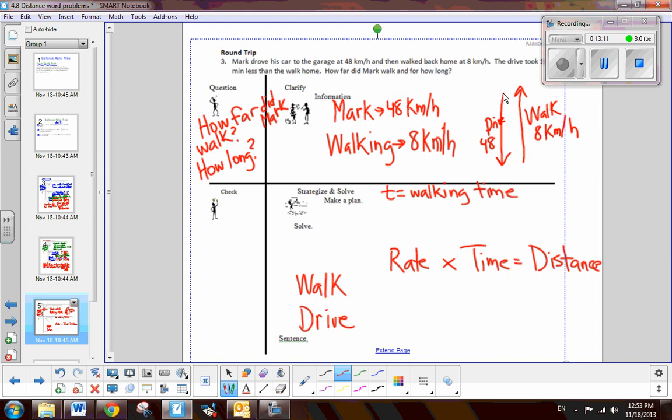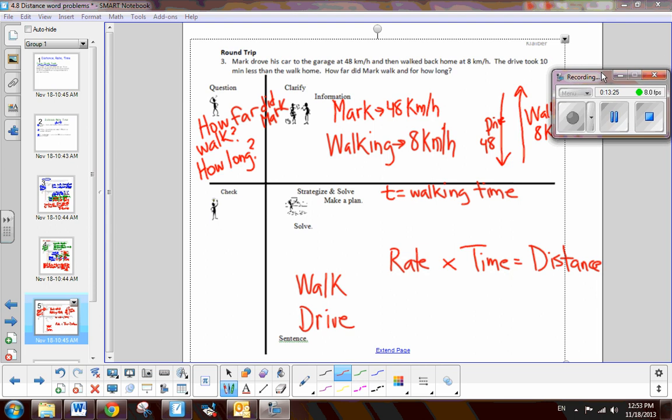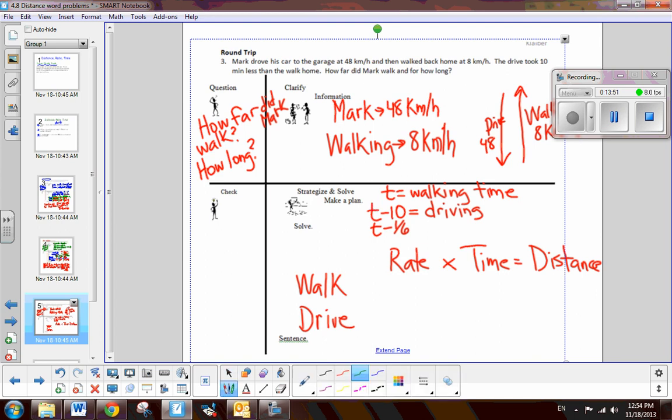And we can find the distance by multiplying the rate times time. And so, if he was walking for T minutes, then how long was he driving for? How do we figure that out? Oh, there's one fact that's kind of hidden by my recording. The drive took 10 minutes less than the walk home. Well, it's T minus 10 for driving. But that's minutes. Oh, dear. How do I change that into terms of hours? So, 10 minutes out of 60 is how many hours? Well, 10 out of 60 is 1 sixth. So, it's T minus 1 sixth. That would be in terms of hours. So, let's fill in our chart now.